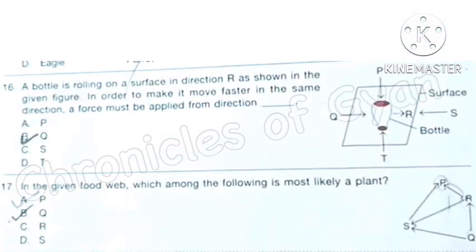Question 16: A bottle is rolling on the surface. Its direction is R as shown in the given figure. In order to make it move faster in the same direction, a force must be applied from direction dash. This is a bottle that goes on the surface, its direction in the Q direction. So it wants to ask if it will give force from which direction it will increase. So this is very obvious from the image that it will give force from Q. So correct answer is option B: Q.